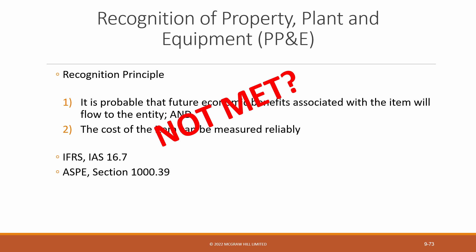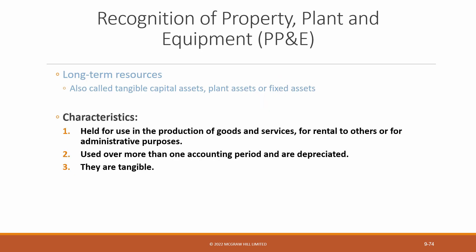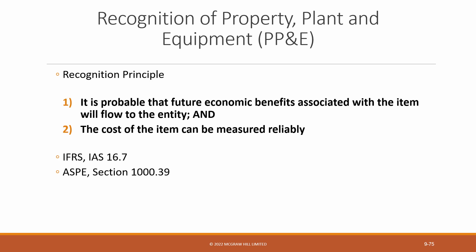What if costs are incurred but don't meet one or both of the criteria? In that case, the costs are recognized as an expense. Examples would be repair costs and the cost of ongoing maintenance — for instance, oil changes to a fleet of company cars. This would be ongoing maintenance and therefore expensed as incurred. Any costs which are ongoing, meaning they are repetitive over the life of the asset, are expensed. The standards clearly indicate that an item of property, plant and equipment must be tangible, last for more than one accounting period, be depreciated, and be used to generate revenue for the entity. It can be recognized when the benefits will flow to the entity and the cost is measurable.